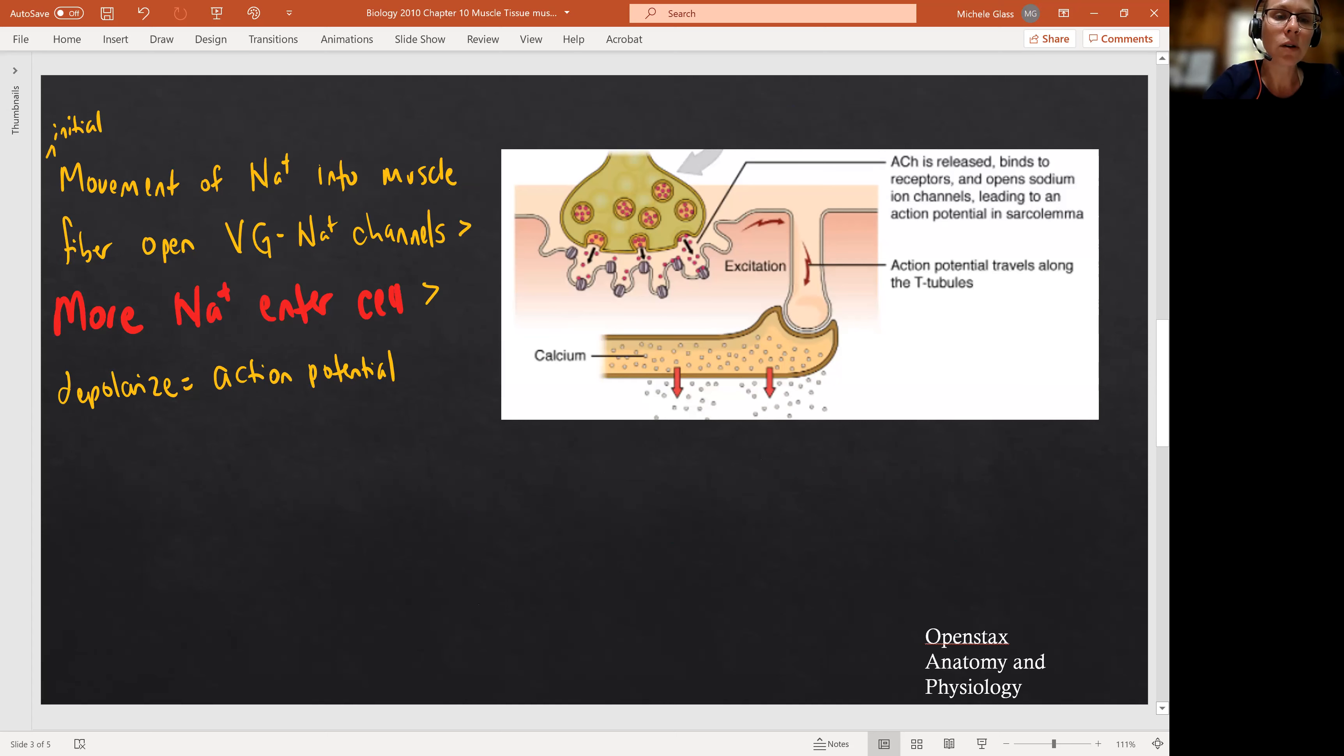And so here we're going to say the action potential is going to propagate, which is another way of saying traveling. We'll explain that more in chapter 12. It's going to propagate across the sarcolemma. Remember sarcolemma is our special name for the cell membrane of the skeletal muscle cell and into the cell via the T tubules. T tubules, remember, is our shorthand for transverse tubules.